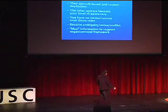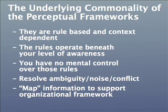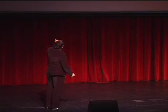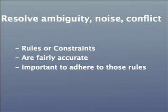It's interesting to find that there's an underlying commonality of the three perceptual frameworks. One, they are rule-based and context-dependent. Two, the rules operate beneath your level of awareness. Three, you have no mental control over those rules. And the goal is to resolve ambiguity, noise, and conflict. And the last — and you'll find this important later on — is to map the incoming perceptual information in a way that is supportive of those existing frameworks, even if they're inconsistent, false, or unusual.